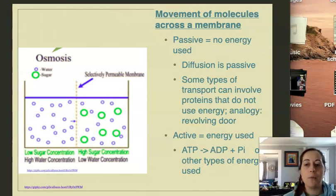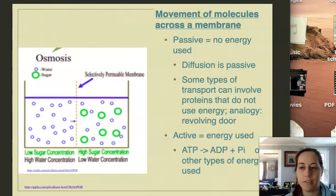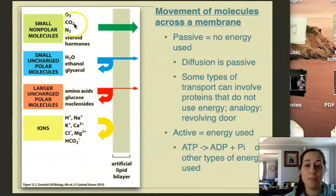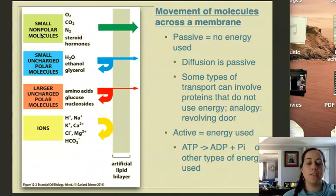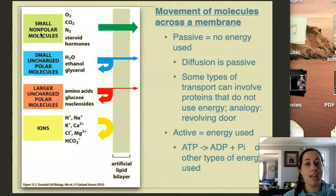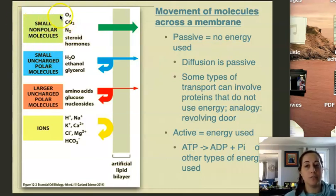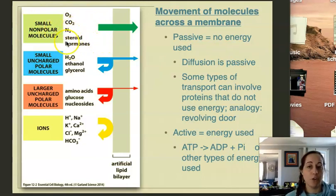I want to continue to talk about passive diffusion and passive osmosis for another couple of minutes. This image from the textbook is a great little cheat sheet — a summary of what types of molecules can passively move across the cell membrane. For the cell membrane, you see that small molecules can move across if they are nonpolar. So we see oxygen, carbon dioxide, N2, and some steroid hormones — they can also cross through the membrane unassisted.